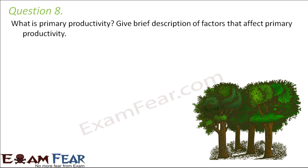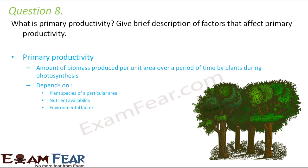Question number eight: What is primary productivity? Give a brief description of factors that affect primary productivity. Primary productivity — the entire production is primarily dependent on the producers. It is the amount of biomass produced per unit area per unit time by plants during photosynthesis. The total amount of biomass produced is primary productivity.